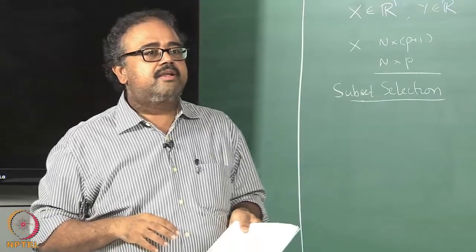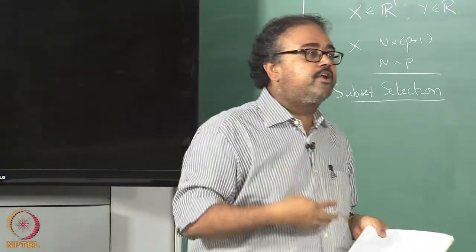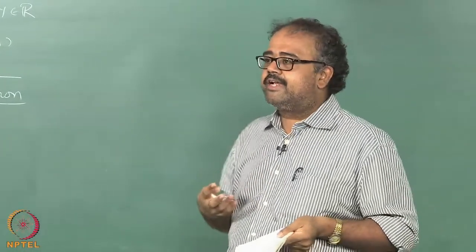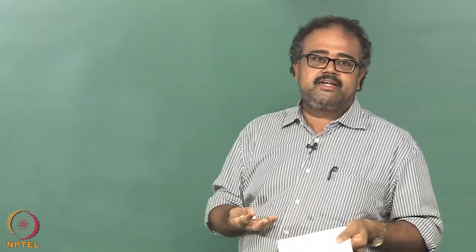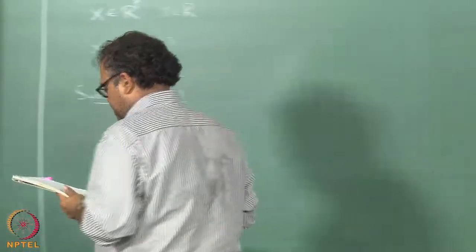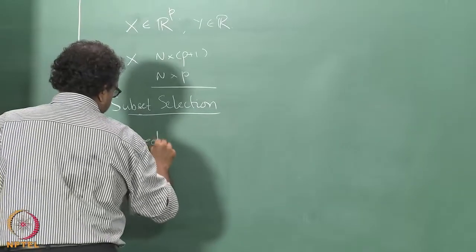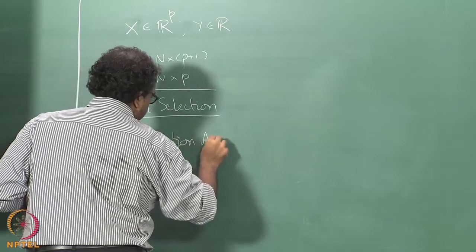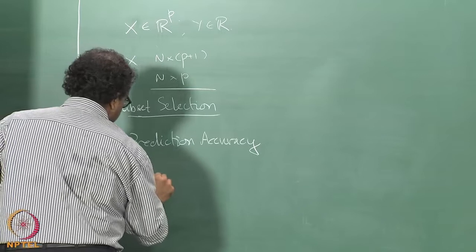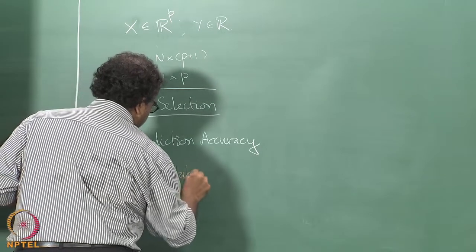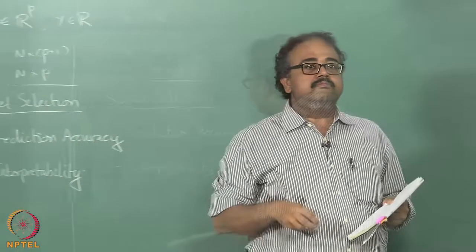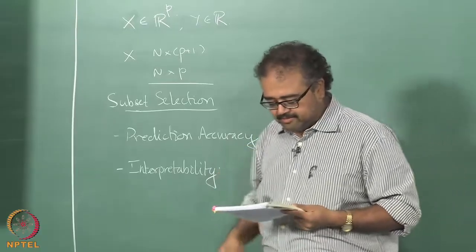Instead of that, if I tell you, okay, here is this model, you gave me 135 variables, but these are the 4 important variables that I need for doing a linear fit. Now it is much easier for you to interpret what is going on. Interpretation is a very big component of any kind of data analytics that you want to do. Ultimately what you are doing with machine learning is trying to understand the data. One of the things you would like to have is interpretability. The first one is interpretability, and that is prediction accuracy.